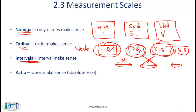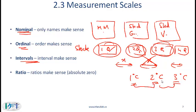With the interval scale, not only do we have order but the interval also makes sense. The classic example is temperature: if you have 1, 2, and 3 degrees centigrade, we know 3 is hotter than 2, and 2 is hotter than 1, and the difference between them — the interval — makes sense. However, ratio doesn't make sense here. We can't say that 2 degrees centigrade is twice as hot as 1 degree centigrade.